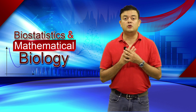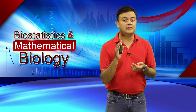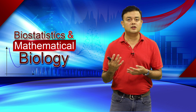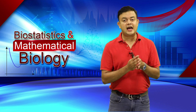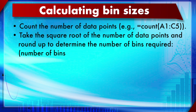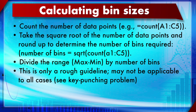This is a discrete variable, but in the case of a continuous variable like height or weight, you have to decide the bin range. A good rule of thumb is to calculate the square root of the sample size n — that gives you the number of bins required. Then divide the range by this square root to get the bin size. Round up or down as appropriate — this is only a rough guideline and may not be applicable to all cases.